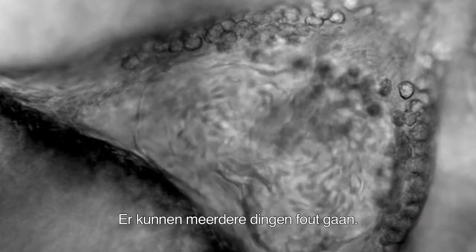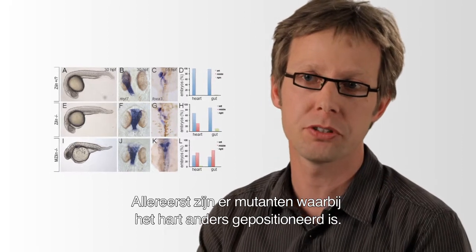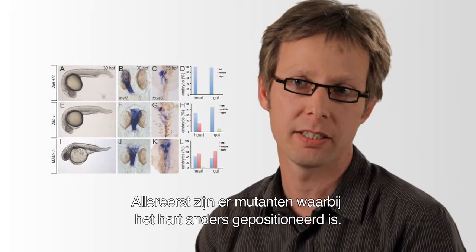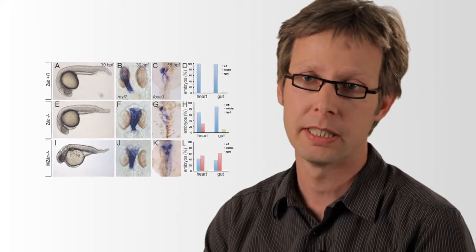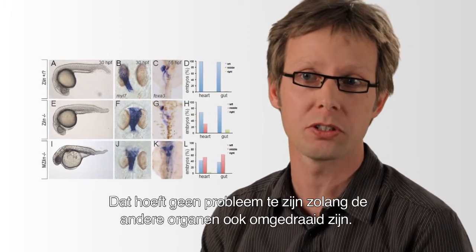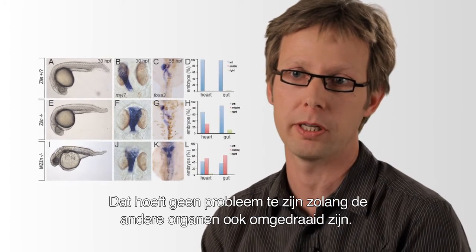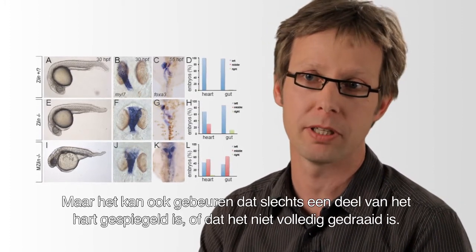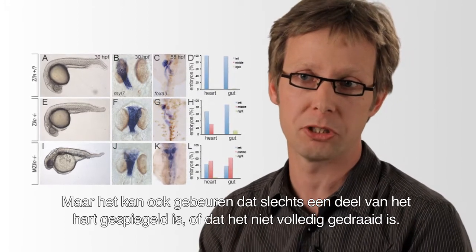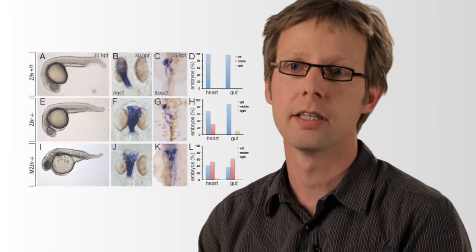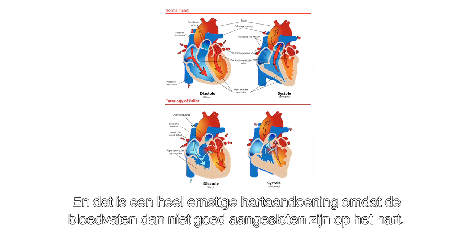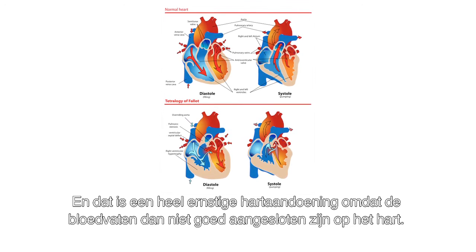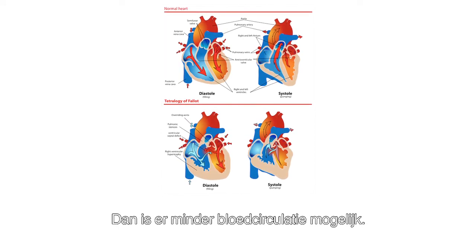Several things can go wrong. First of all, there are mutants in which the position of the heart is different — so instead of on the left side, it's on the right side of the body. This is actually not a problem as long as all the other organs are reversed in their orientation as well. It can also happen that only a part of the heart is mirror-imaged, or it's not completely rotated. That is a very severe congenital heart defect, because the arteries basically don't connect properly to the heart, and so there is less circulation possible.